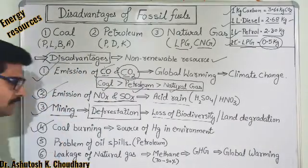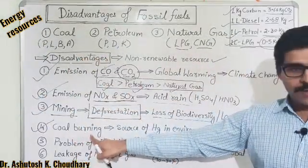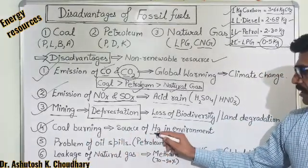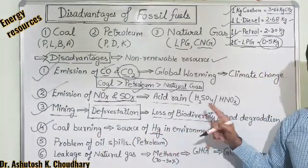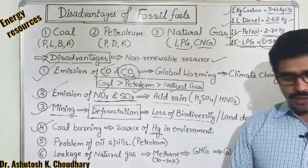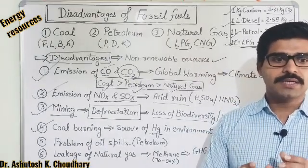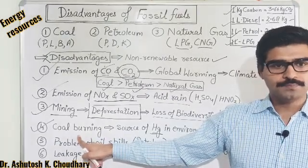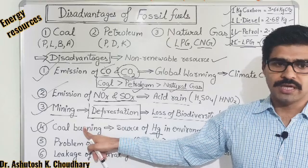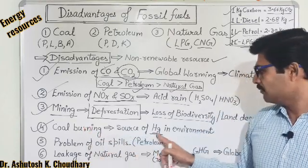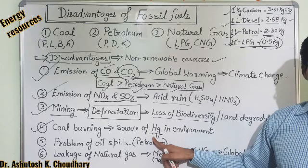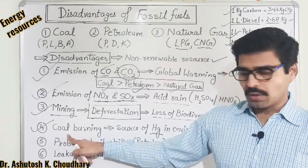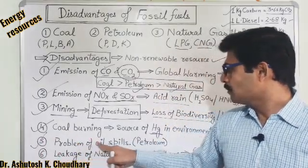The next disadvantage is that burning of coal is a source of mercury (Hg) in the environment. Coal contains some quantity of mercury which, after burning, is released into the air, and from the air it goes into aquatic bodies. Mercury is a toxic heavy metal, so this is one of the disadvantages of burning coal.